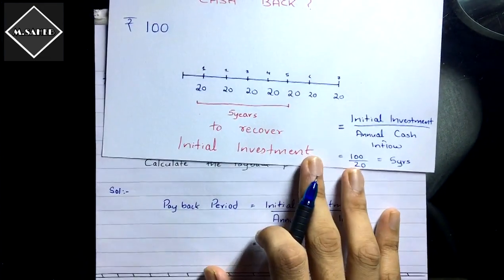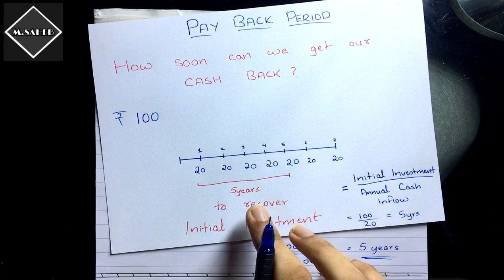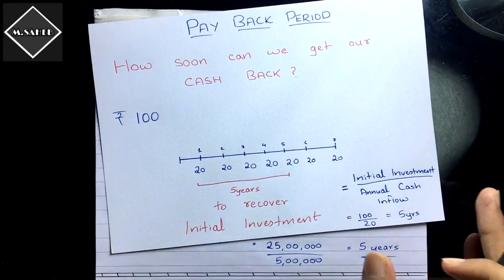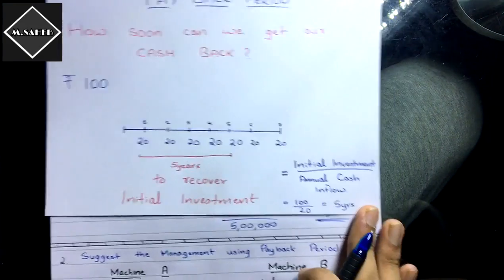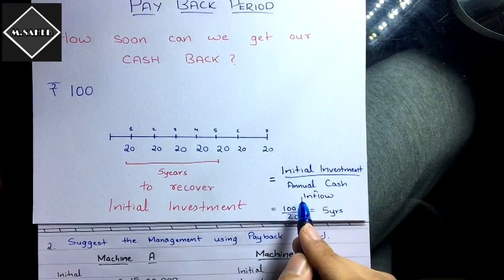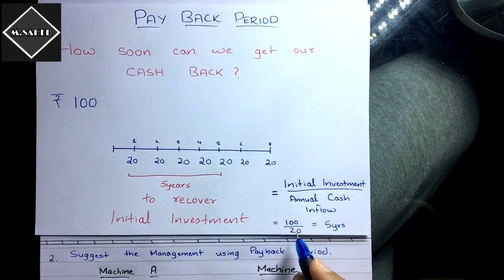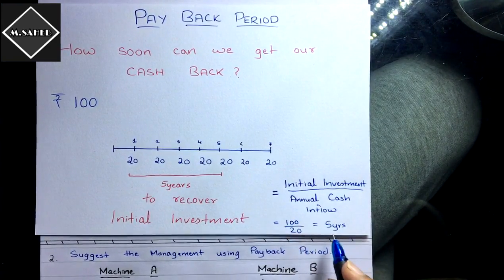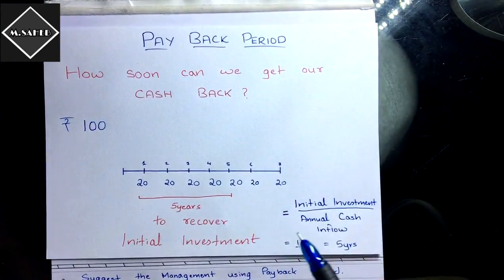Five years is a long time, so it's not considered a good project — generally if it exceeds three to four years it's not ideal, but it depends on the management. The formula is very simple: Initial Investment divided by Annual Cash Inflow. So 100 divided by 20 equals five years.